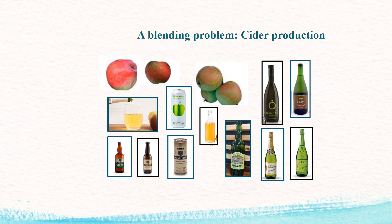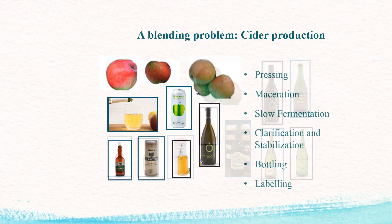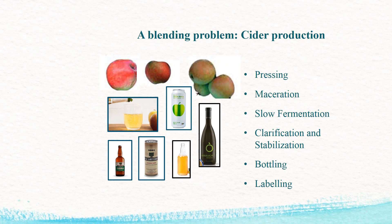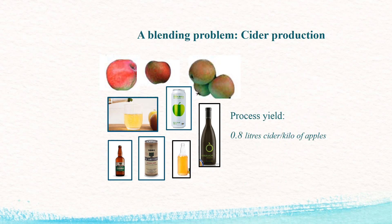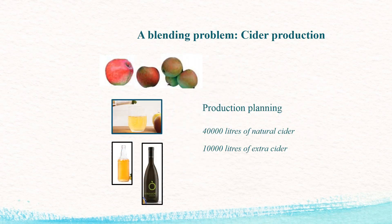Could you explain how the cider is made? In short, the production process has several phases: pressing, maturation, fermentation, clarification, stabilization, bottling, and labeling. The process yield is high and produces 0.8 liters of cider per kilo of apples. The company is planning to produce 40,000 liters of natural cider and 10,000 liters of extra cider for the next season.